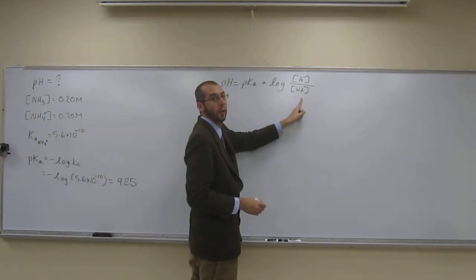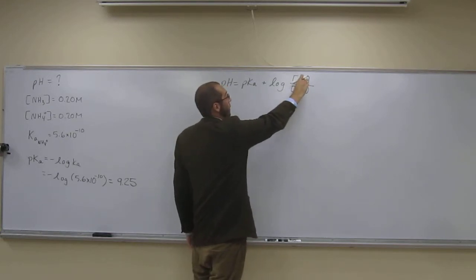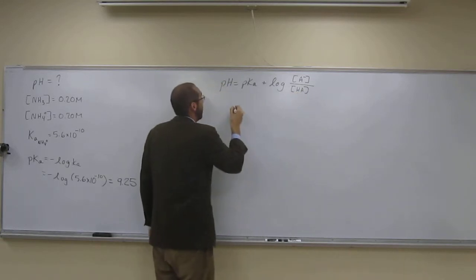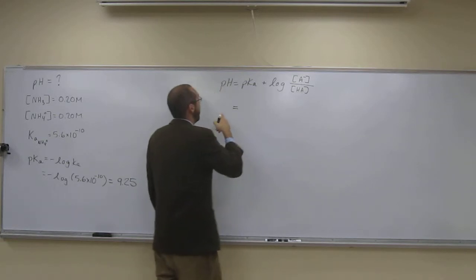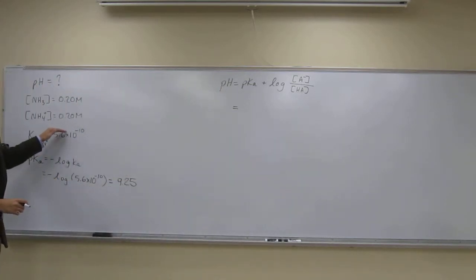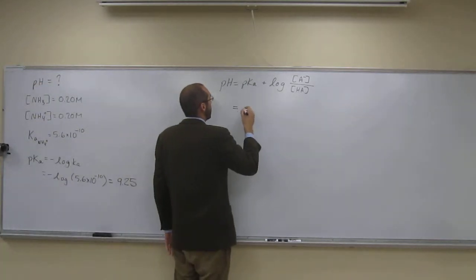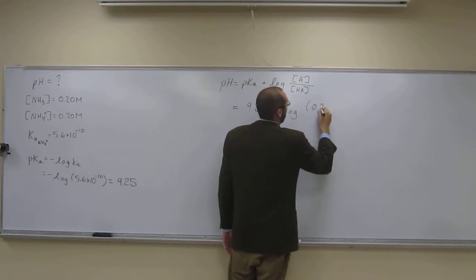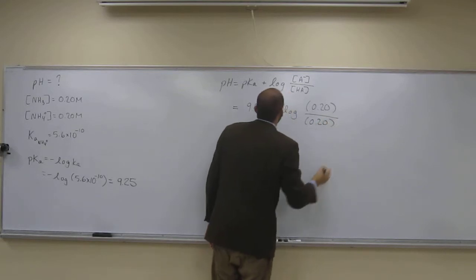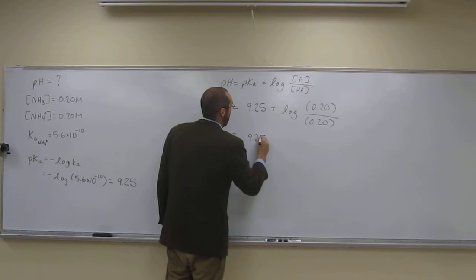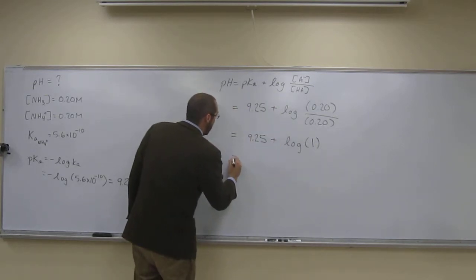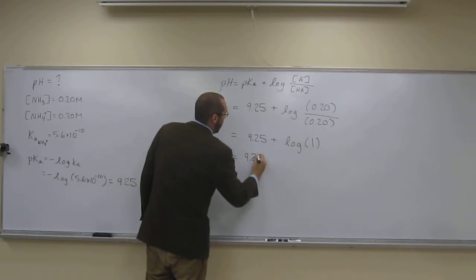We have pKa, and we have both concentrations. The ratio is 0.2 over 0.2, which equals 1, and the log of 1 is 0. So pH equals pKa, which is 9.25, plus the log of 0.20 divided by 0.20 — that's 9.25 plus the log of 1, which is 9.25 plus 0. The pH for part one equals 9.25.